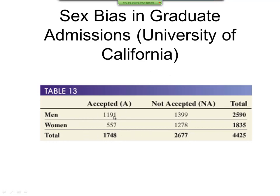If you look at it, men was a total of 2590. They accepted 1,191 and not accepted was 1,399. For women, there was a total of 1835 and accepted was 557 and not accepted was 1278. And then total, you see down there. Well, looking at it, the ones they didn't accept looks like about the same amount, doesn't it? So it looks like they're showing some bias against women in their acceptance.